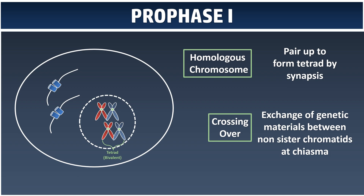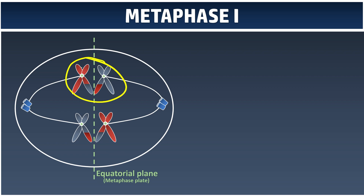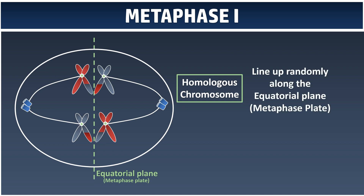After Prophase, it is followed by Metaphase I — M for middle — where all of the chromosomes line up in the middle of the cell, called the metaphase plate. But this time, instead of only one chromosome, we have a pair of homologous chromosomes. So you might use the phrase that the homologous chromosomes line up randomly along the metaphase plate, or sometimes we say a pair of homologous chromosomes, or we can say this is a tetrad or bivalent.